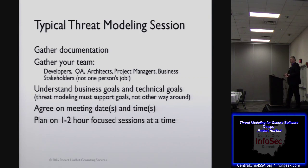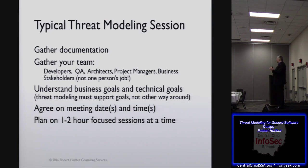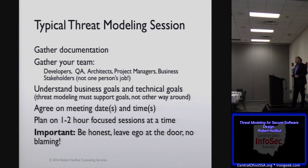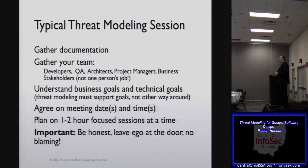Agree on meeting dates and times — I usually say about one to two hours at a time, because if you try to do this for an entire day, your team is going to get just overwhelmed. Have a focused time, one to two hours. And most important: be honest, leave ego at the door, and no blaming. When you're looking at these things, especially after the fact, it's so easy to say why didn't we do that or why did we miss that — don't do that. The point of all this is we're all on the same team, all trying to accomplish the same thing: to secure our system. Get focused on where are we today, let's figure it out, and how can we go forward and make this secure.